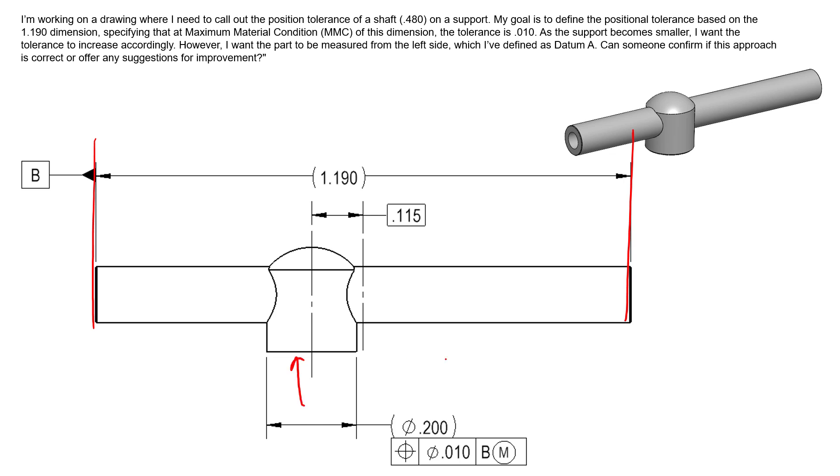And so we see that we have Datum Feature B, which is this width of 1.190. Now if we want to control this support with respect to the shaft, we can see that we can do that using position on the diameter of our shaft. Again, the diameter of the shaft—or sorry, the support—is going to be referenced because that size of the diameter of that support is going to be on the piece part drawing. But nonetheless, we can still use that size to locate this feature of size with respect to this feature of size.